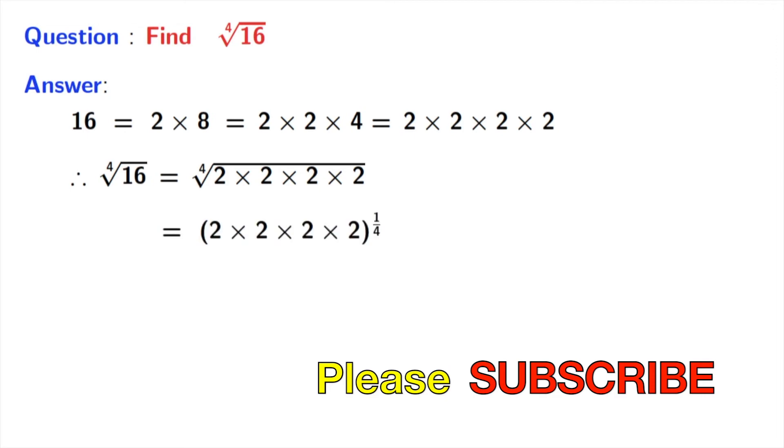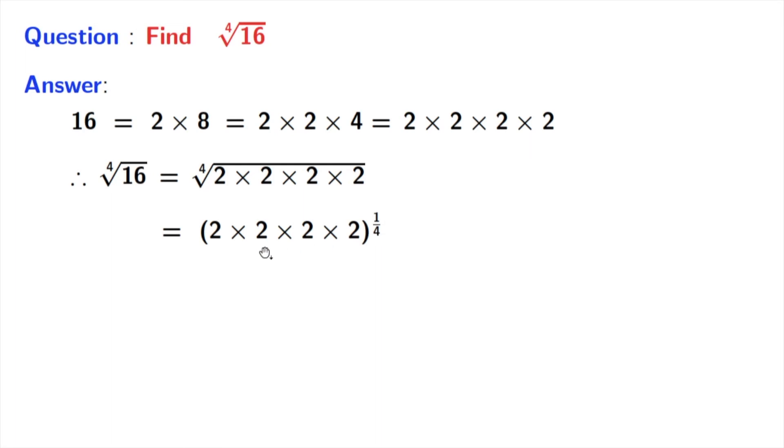Now we can easily write fourth root equal to power 1 by 4. So we have written it in this way. And look that there are 4 number of 2's here. So we can take it as 2 power 4. So we have 2 power 4 times 1 by 4.